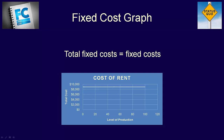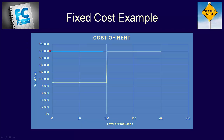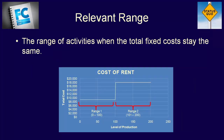Now, does this mean that fixed costs will always stay at $9,000 for Josephine Inc.? If Josephine Inc. wants to expand production above 100 units, they will have to rent the space next door. That additional space will cost an additional $9,000, since it's the same size. With that additional space, the company can produce from 101 units to 200 units more. So, you can see that our graph, up to 100 units, stays the same with the intercept at $9,000. However, from 101 units to 200 units, our total fixed costs increases to $18,000. So, we have two ranges of costs: one from 0 to 100 units, and one from 101 units to 200 units. This is the concept of a relevant range — a relevant range is a range of activity where the cost behavior is a straight line.